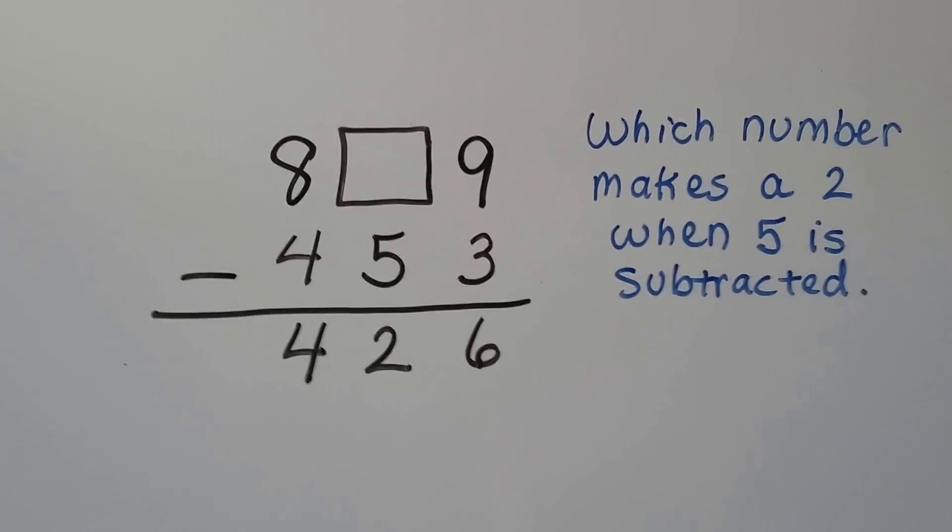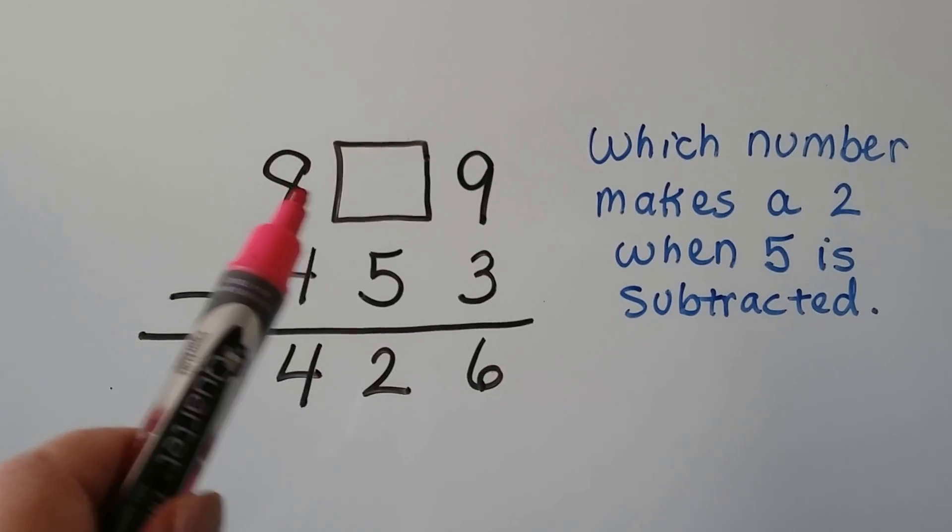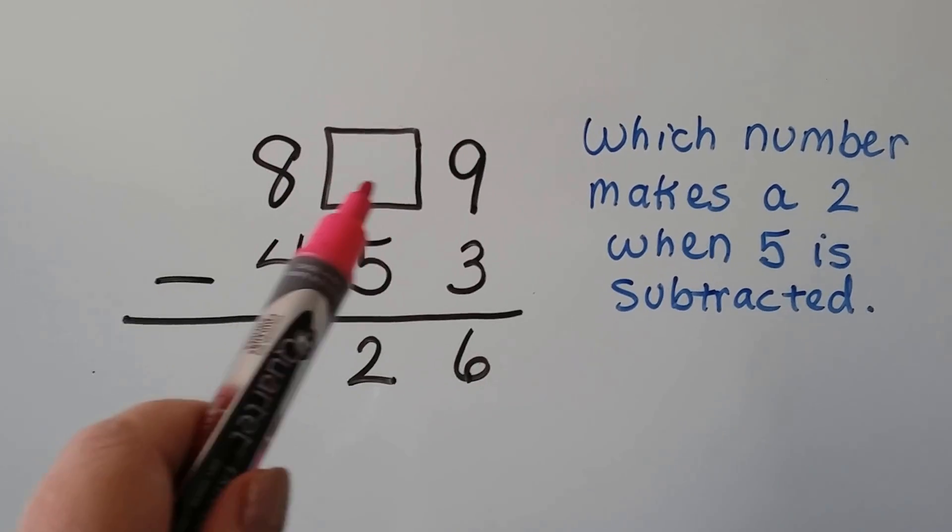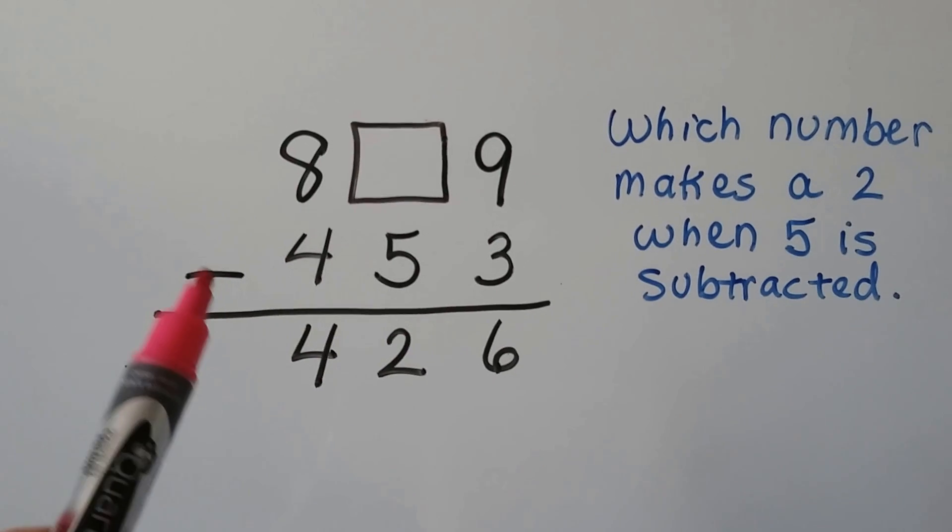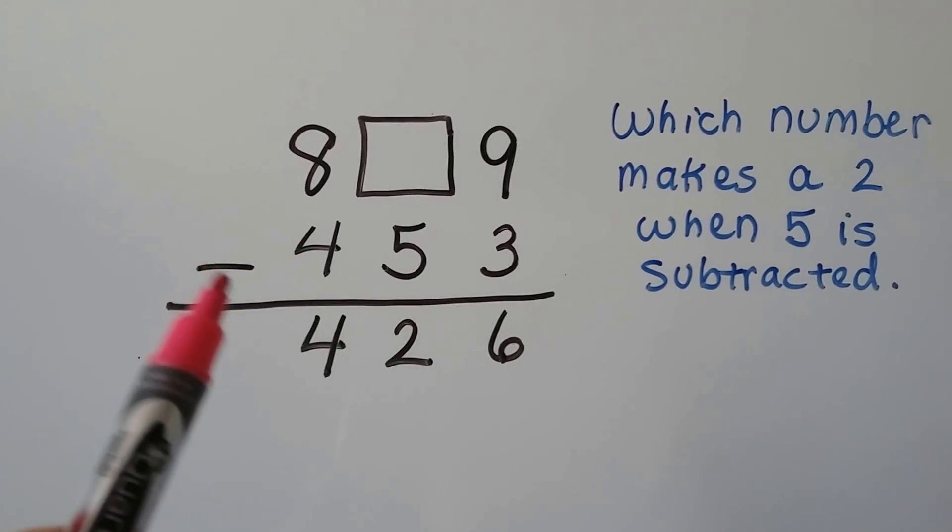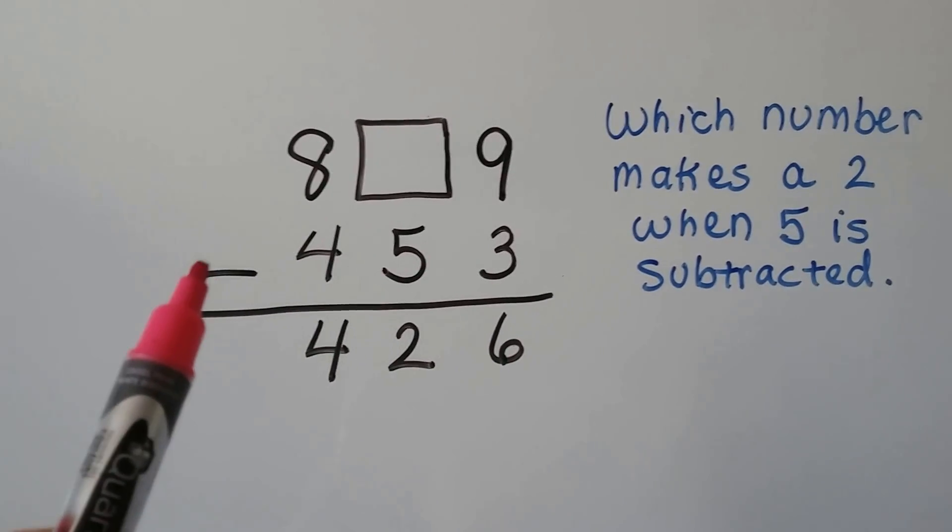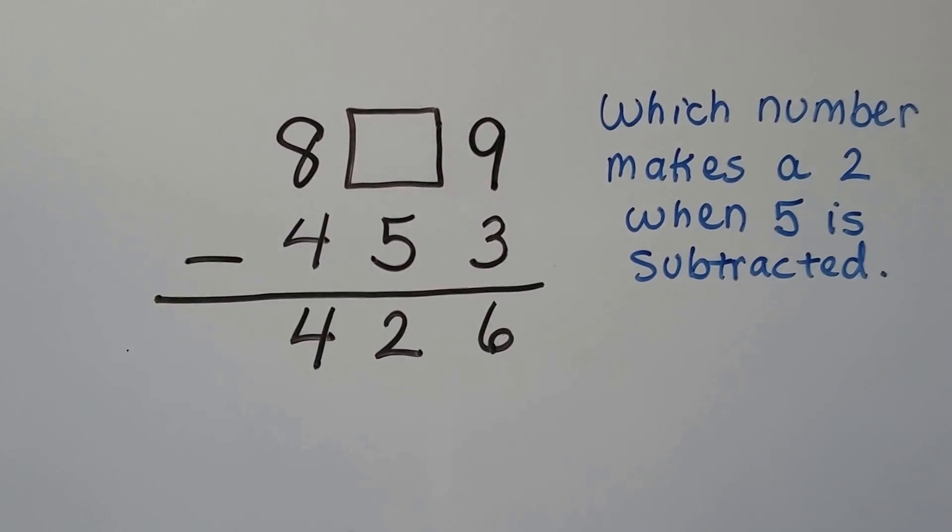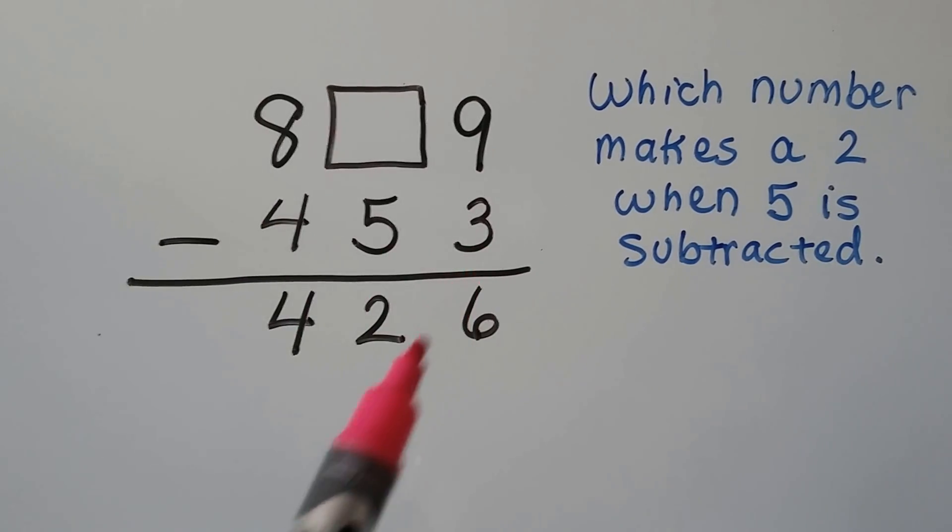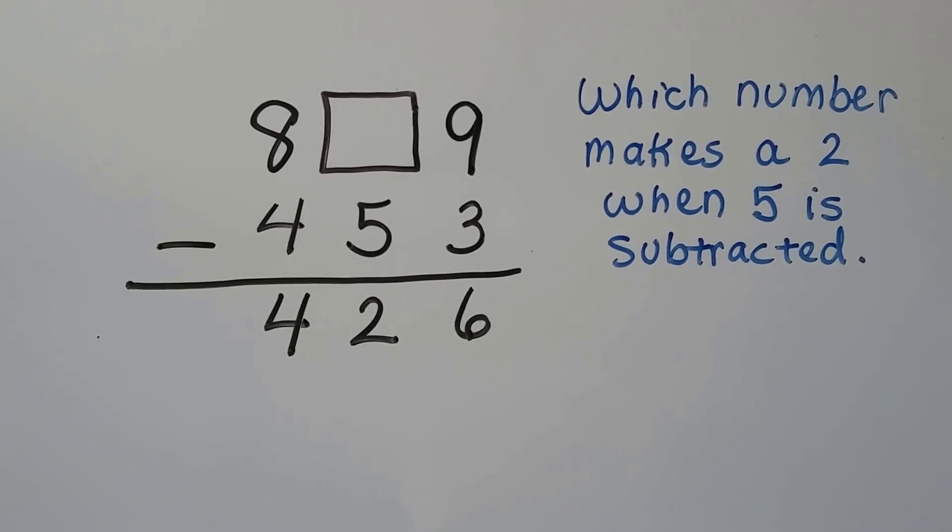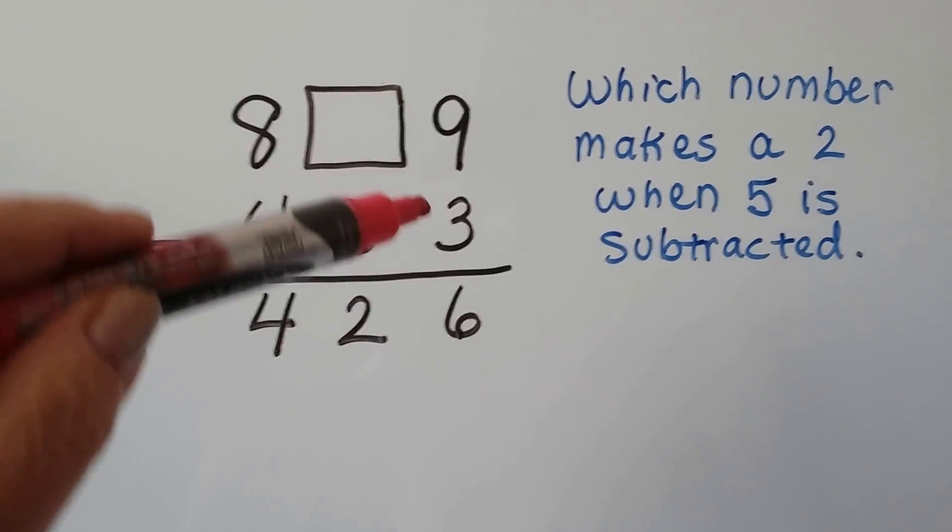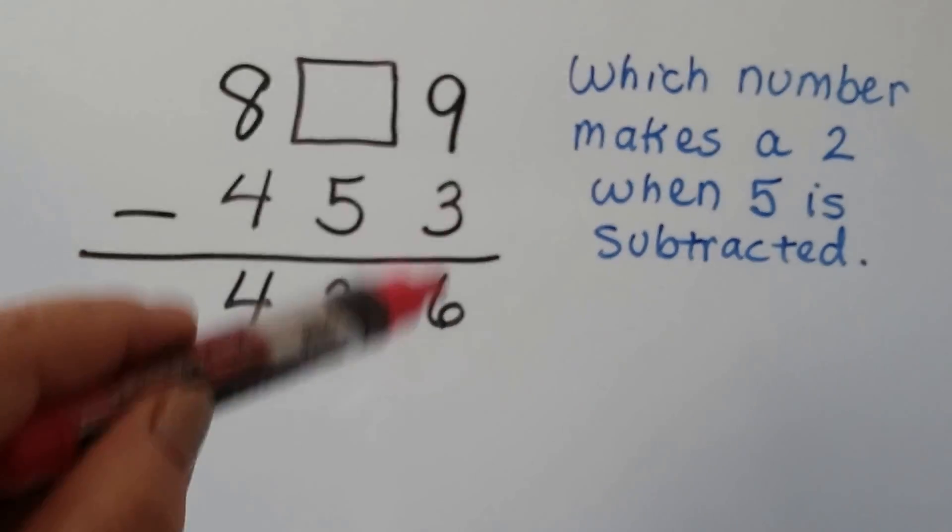All right. Let's take a look at this one. We have 800, some tens, we don't know what it is, and a 9. And we're taking away. Pay attention to your signs because it could be plus or minus. So always pay attention to your sign. We're taking away 453 and we're going to have 426 left. We start with the ones place. 9 minus 3 is 6. So this one's okay.